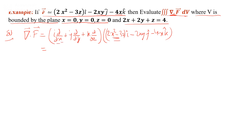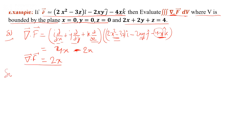Taking i·i, we differentiate with respect to x and get 4x. Taking j·j, we differentiate with respect to y and get -2x. Taking k·k, we differentiate with respect to z and get 0. So we obtain del·F = 4x - 2x = 2x.